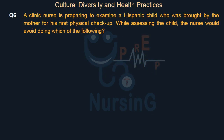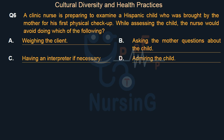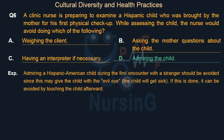A clinic nurse is preparing to examine a Hispanic child brought by the mother for his first physical check-up. While assessing the child, which of the following should the nurse avoid? Option A: Weighing the client. Option B: Asking the mother questions about the child. Option C: Having an interpreter if necessary. Option D: Admiring the child. The right answer is Option D — Admiring the child. Admiring a Hispanic-American child during a first encounter with a stranger should be avoided, as this may give the child the evil eye and make the child sick. If this occurs, it can be offset by touching the child afterward.